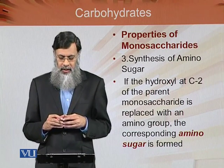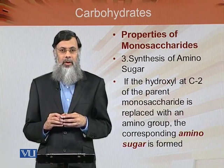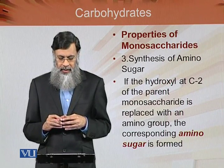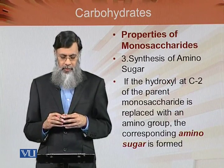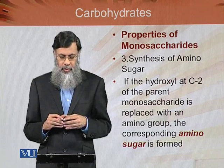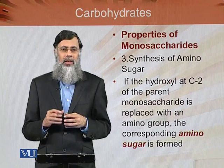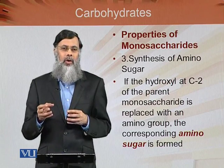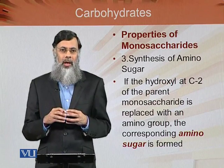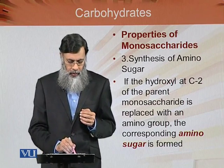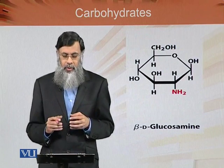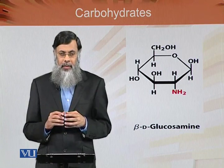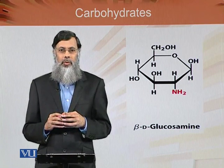If the hydroxyl group at C2 of the parent monosaccharide is replaced with an amino group, the corresponding amino sugar is formed. In other words, if we remove the hydroxyl group from carbon atom number 2 and attach an amino group in its place, an amino sugar is formed. This is the diagrammatic presentation of an amino sugar.